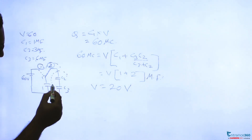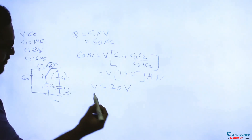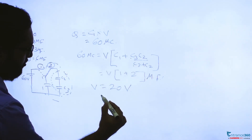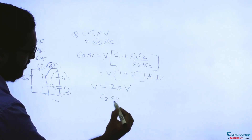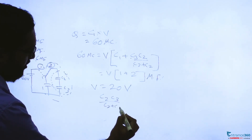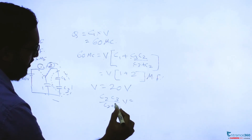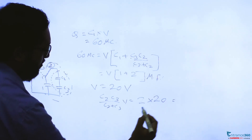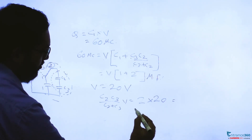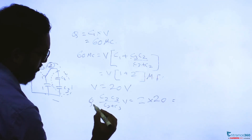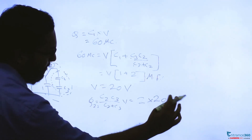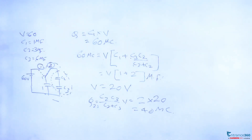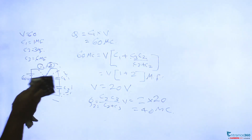Now we have to find the total charge on C2 and C3, which equals C2·C3 divided by C2 plus C3, into V. That is 2 into 20, which equals 40 microcoulombs. So the net charge on capacitances C2 and C3 is 40 microcoulombs.